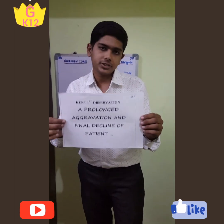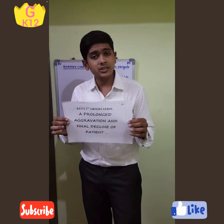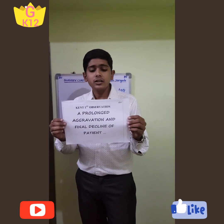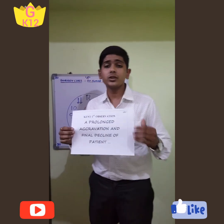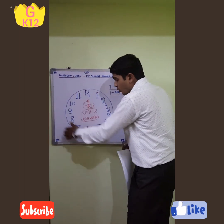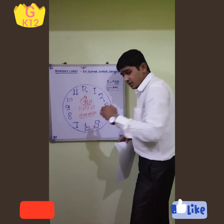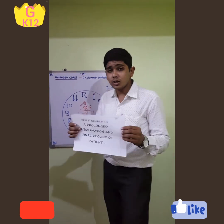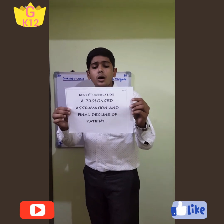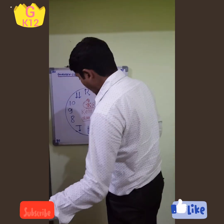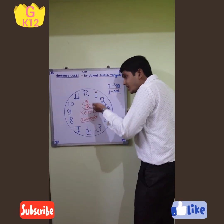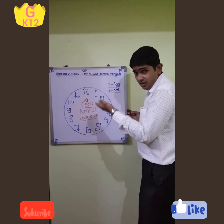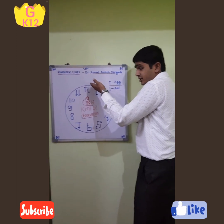In the first observation, Dr. Kent said that there is prolonged aggravation and the final decline of the patient. After the first prescription, the patient is getting worse and worse, aggravation is becoming worse and worse, and the patient is going toward decline. The upward going arrow indicates that complaints are going worse and worse; amelioration is not coming, and the patient keeps getting aggravated until the final decline of the patient happens.